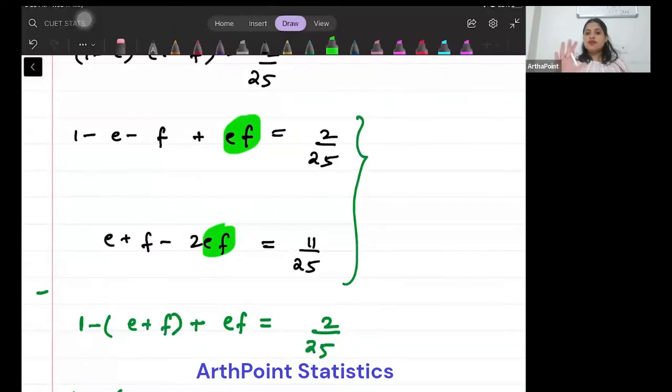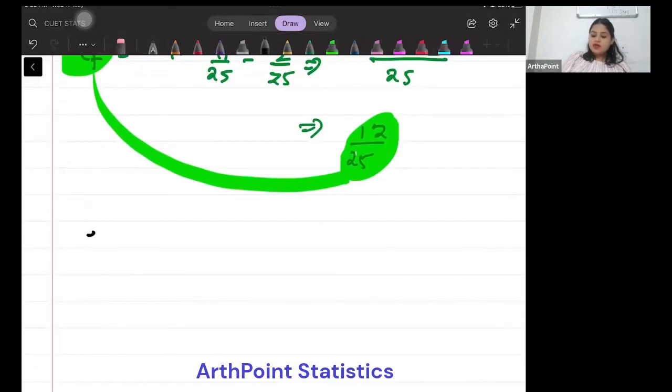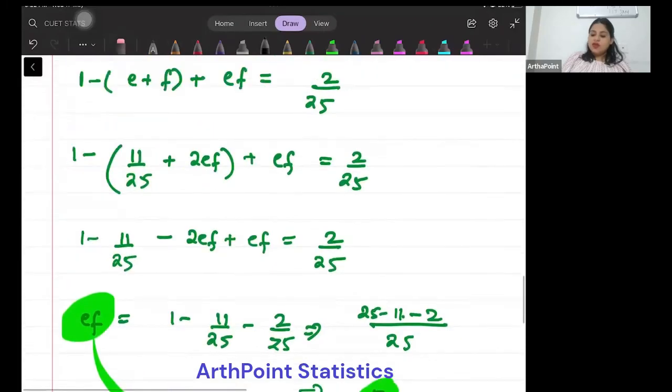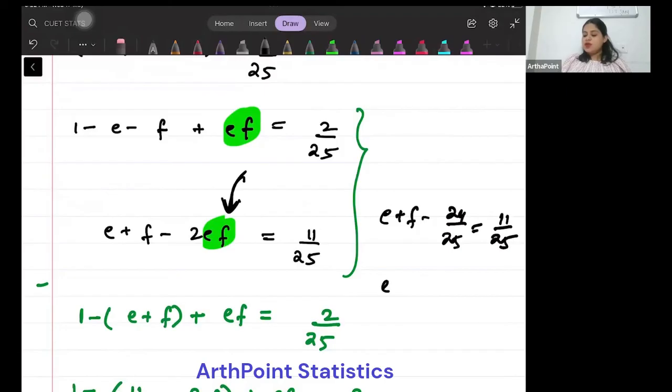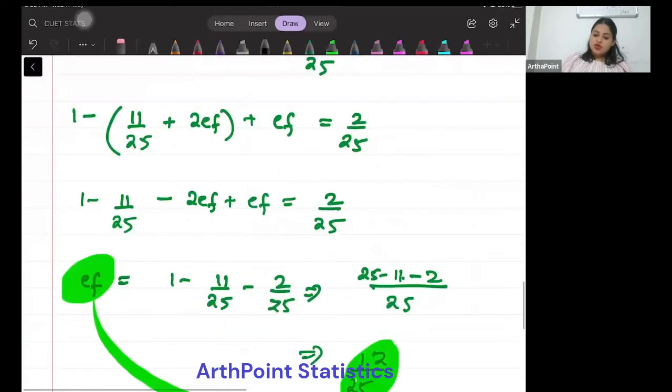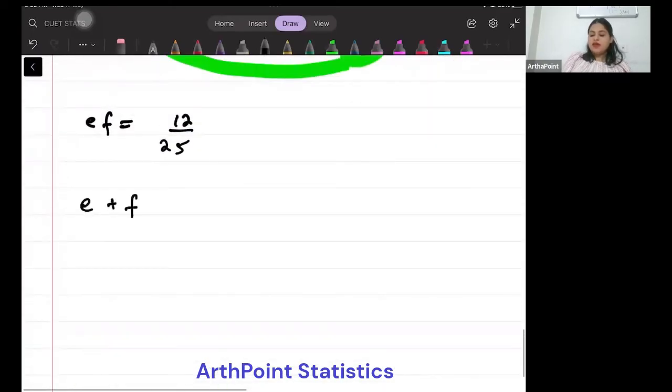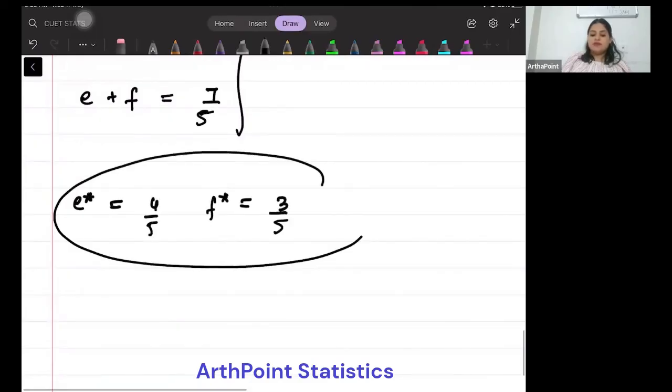You had two equations, so EF is 12 by 25. Put it here, put it here. If I put 12 by 25, I will get E plus F minus 24 by 25 is 11 by 25. So E plus F is 11 by 25 plus 24 by 25, which is 35 by 25, that means 7 by 5. You will get EF is 12 by 25 and E plus F is 7 by 5. Solve these two equations simultaneously. You will get E star as 4 by 5 and F star as 3 by 5.